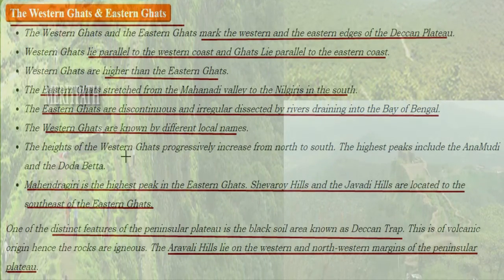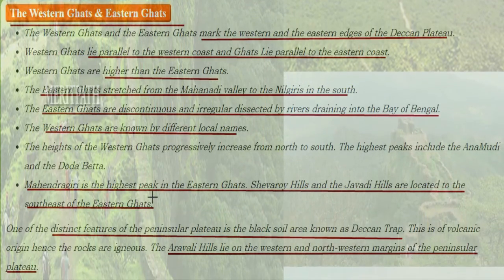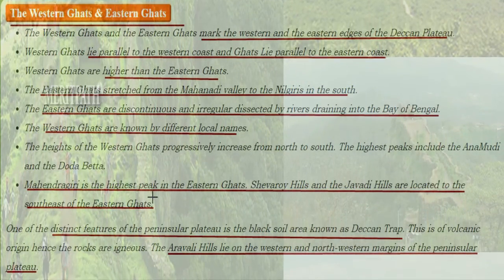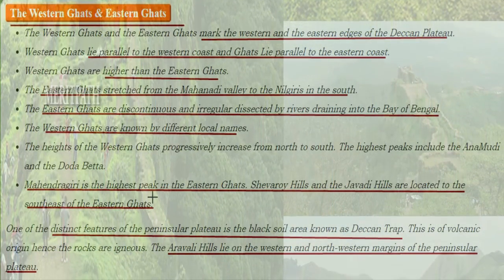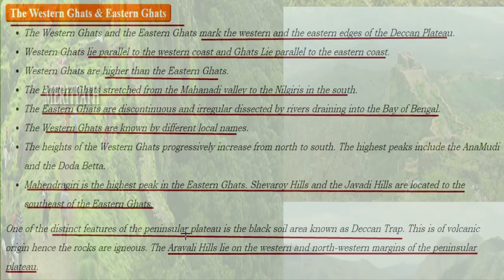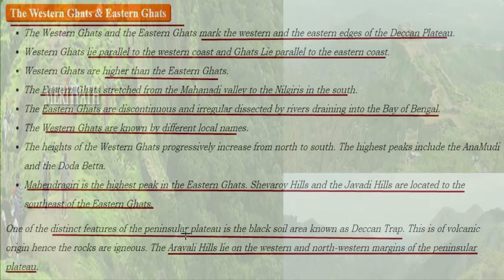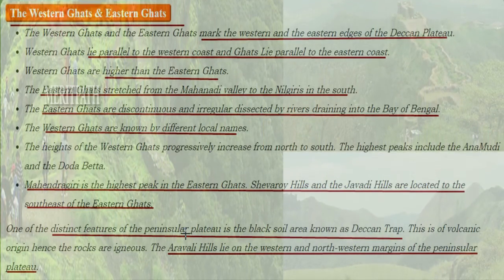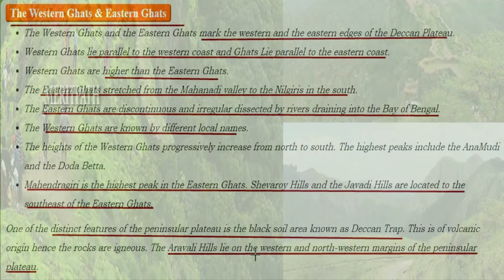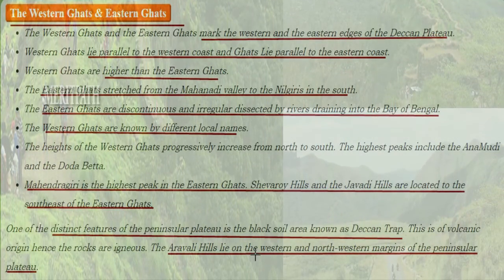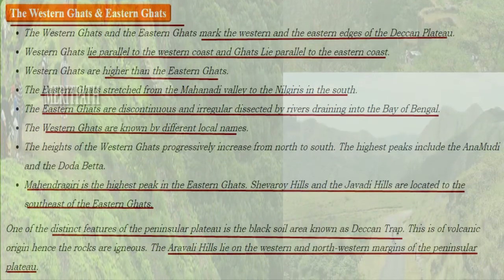The Western Ghats are differently known by local names, and their heights progressively increase from north to south. The highest peaks include Anamudi and Doddabetta. Mahendragiri is the highest peak in the Eastern Ghats. Shevaroy Hills and Javadi Hills are located to the south-east of the Eastern Ghats. One of the distinctive features of the peninsular plateau is the black soil area known as the Deccan Trap.